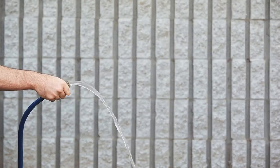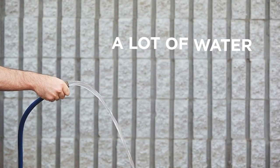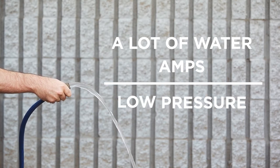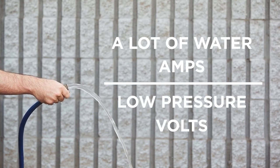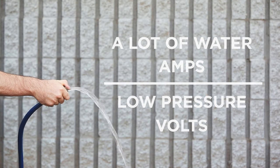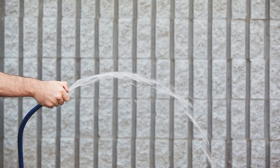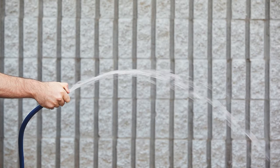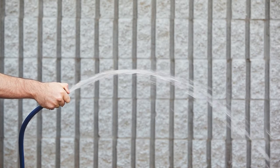When you turn on a garden hose without a nozzle, there's a lot of water, or amps, but not much pressure, or volts. But by placing your thumb over the end of the hose, you reduce the quantity — amps — but increase the pressure, or volts, so it squirts farther.